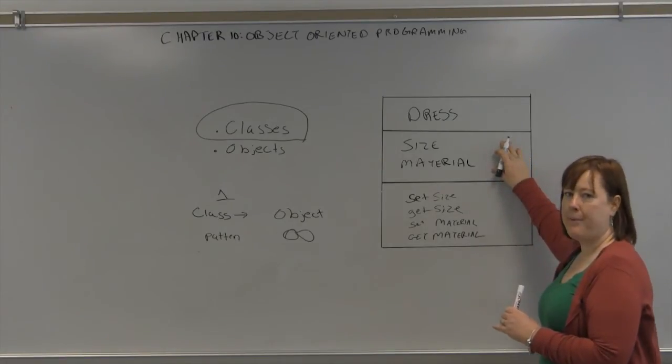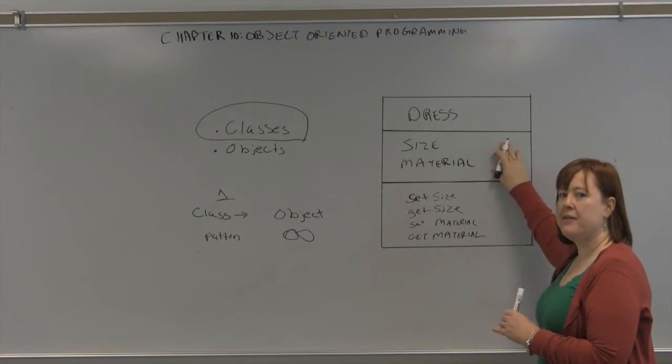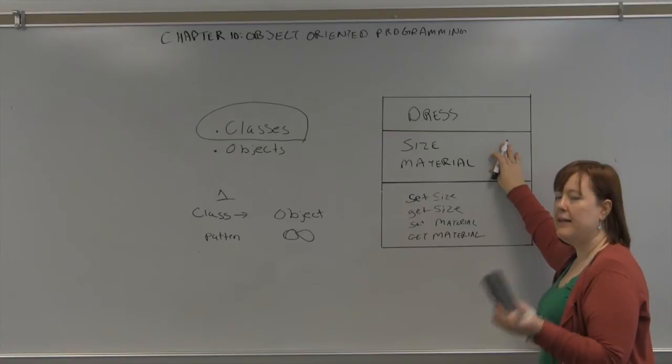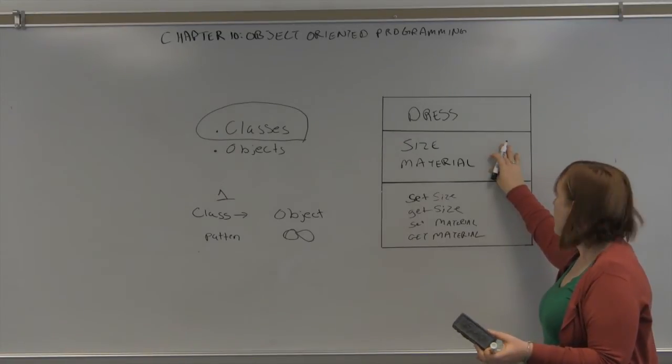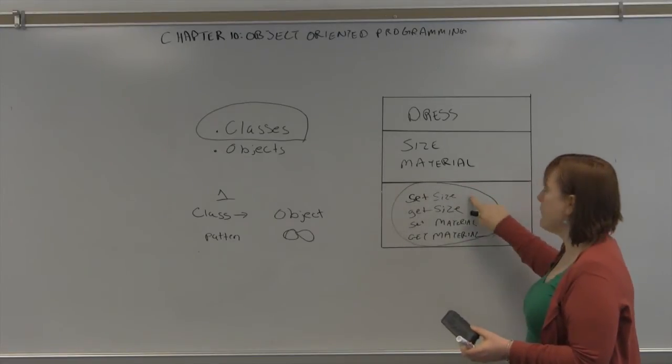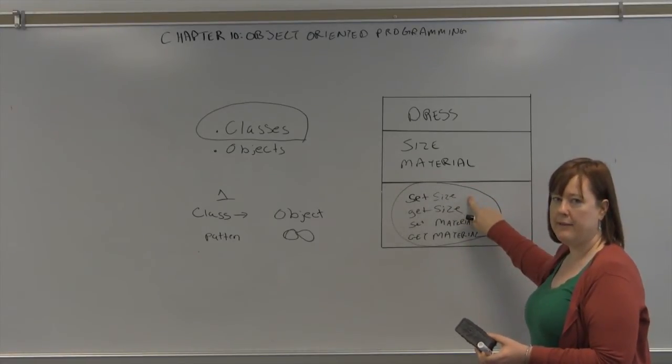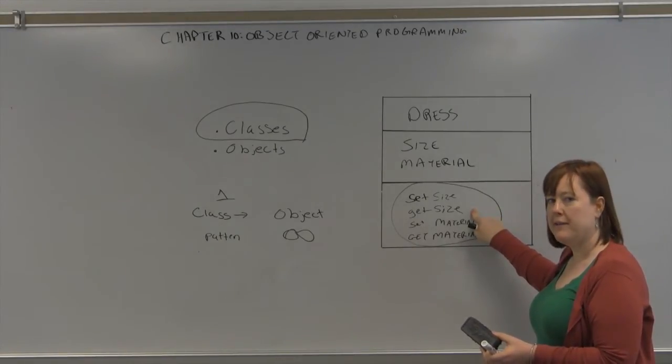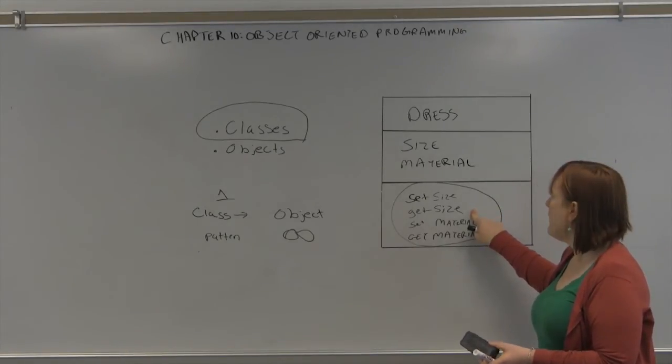Attributes are generally private. That means that you set them with a private keyword that hides them from other programs. Because once you create a class, it can be used by any other program. But you typically want other programs to only access the methods. So there's methods where they can get the attributes, and methods where they can change or set the attributes. And that's the way most classes work.